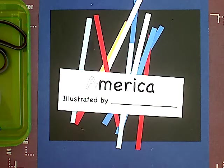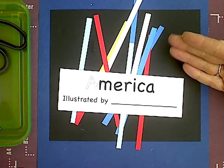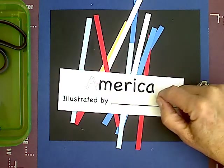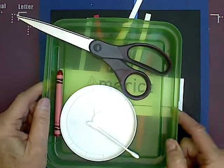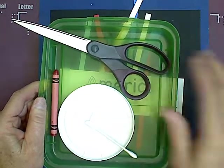Today we will be making our America book. You should have a bag in your supplies with all these little strips of paper, this paper, a black paper. You'll need your usual things: scissors, glue, you might or might not need a trash tray.